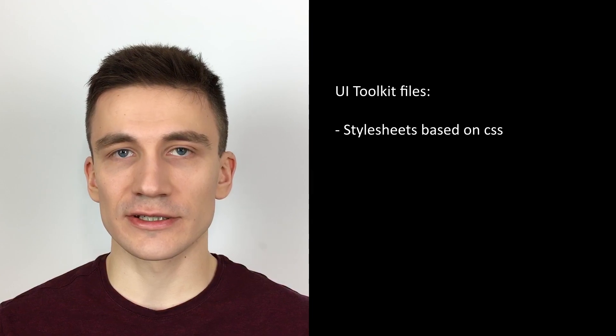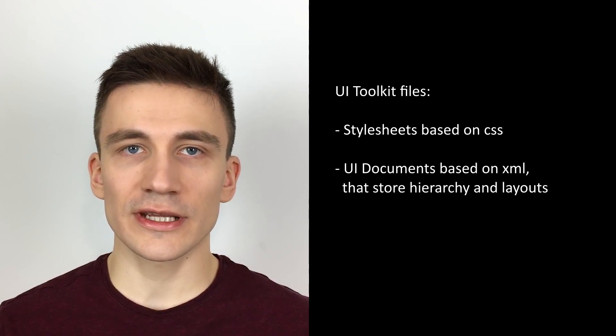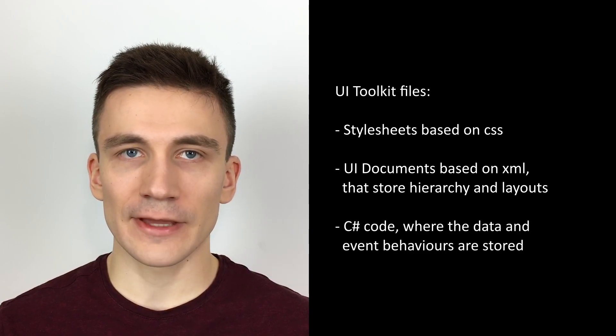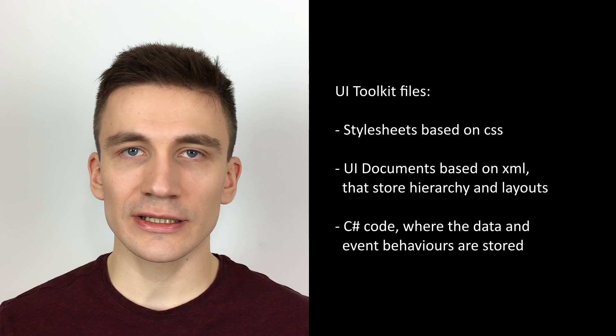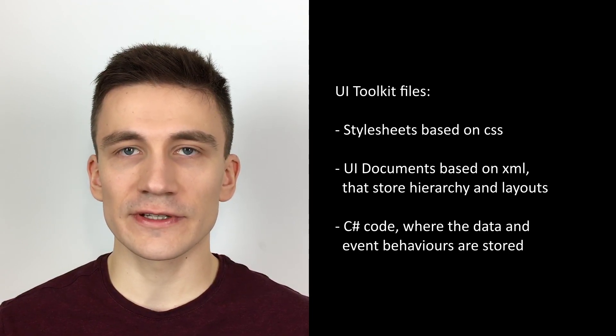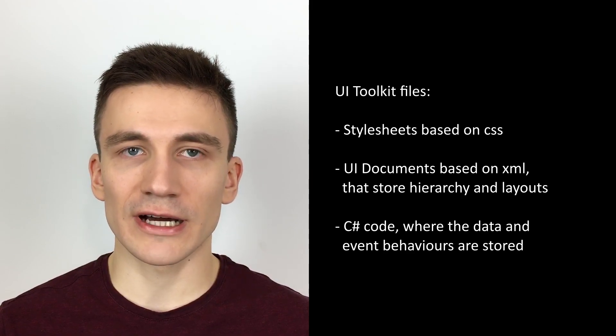We will spend most of the time looking at a 2D blueprint of the UI design. All parts of the UI Toolkit system are represented in three different ways in code: separated into stylesheets based on CSS, UI documents based on XML that store the hierarchy and layout of elements, and C# code, where we store all the data that can be shown in the UI and also where the behaviors for different events are defined, like for example clicking a button.